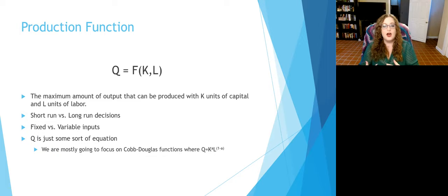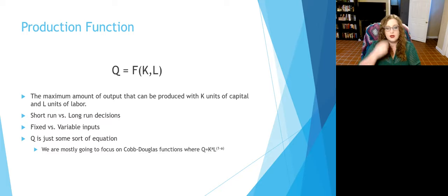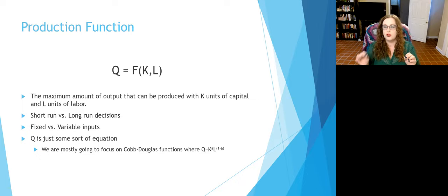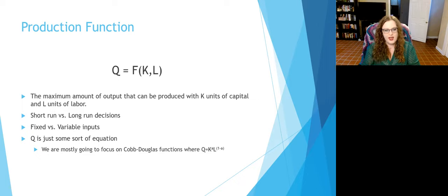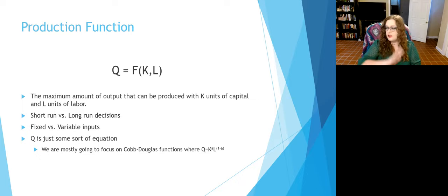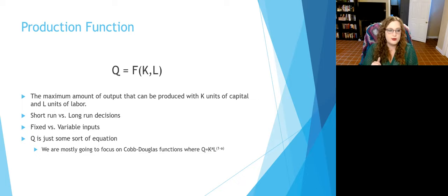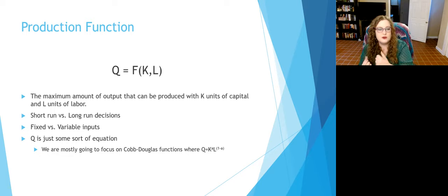We can adjust labor very easily in the short run. Remember that we're going to have short run versus long run decision making. In the short run, the amount of capital is fixed — the number of pottery wheels I have in my studio cannot change. In the long run, I can buy a bigger pottery studio, have more kilns, more pottery wheels. In the long run, we can adjust the amount of capital — the machines or non-human inputs — while in the short run we can't.